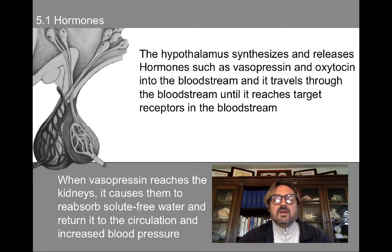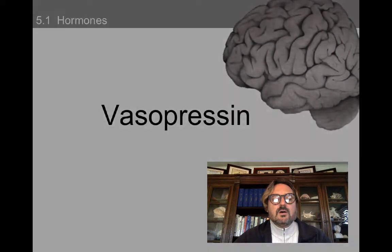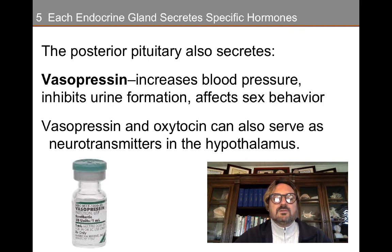The hypothalamus synthesizes and releases hormones such as vasopressin and oxytocin into the bloodstream, which travels through the bloodstream until it reaches target receptors. When vasopressin reaches the kidneys, it causes them to reabsorb solute-free water and return it to the circulation, which then increases blood pressure. Vasopressin is a posterior pituitary hormone — it increases blood pressure, inhibits urine formation, and affects mating behavior or sex behavior.